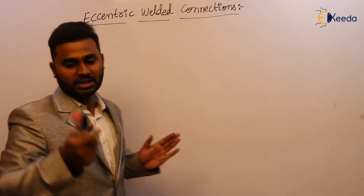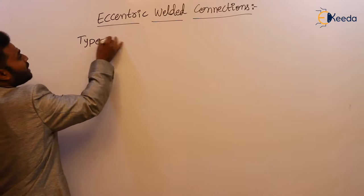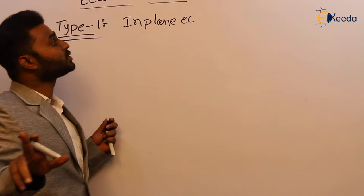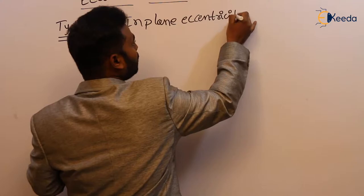Now, Type 1 — what is Type 1? In-plane eccentricity. We know what is meant by in-plane eccentricity: if both the load and the weld lie in the same plane, then it is known as in-plane eccentricity.